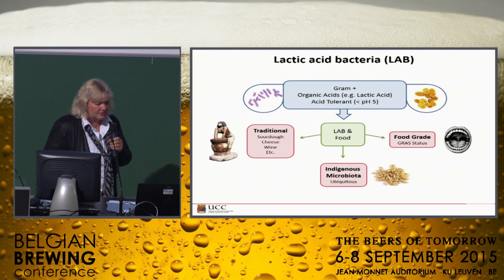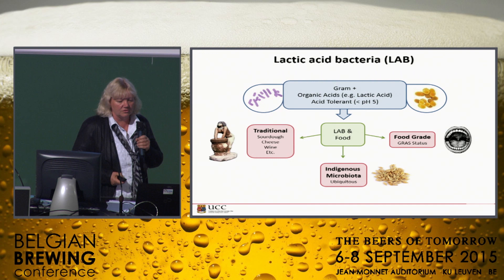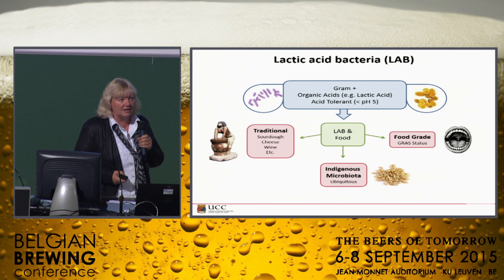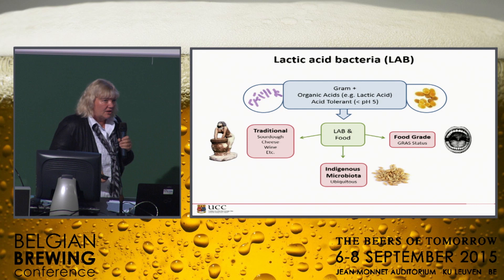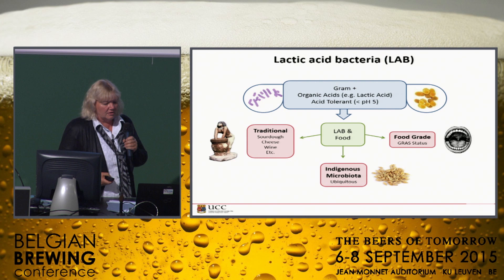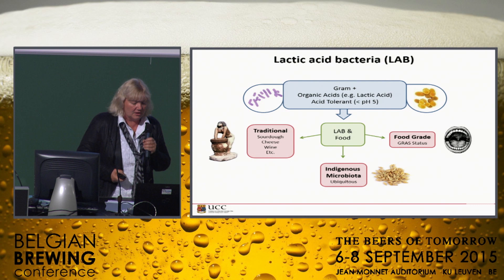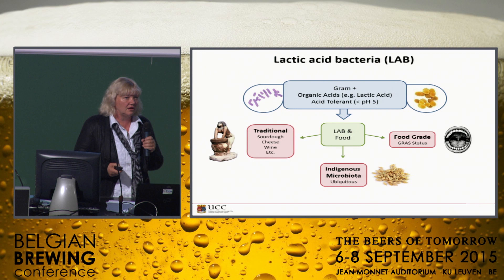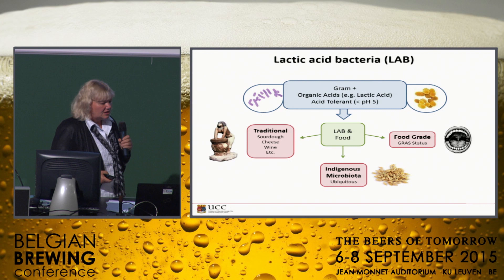To quickly introduce them: they're gram positive, they can utilize carbohydrates and turn them into lactic acid, and sometimes also a little bit of acetic acid, and if you're very lucky, even alcohol. They are very acid tolerant, so they can live quite happily in beer, especially if they're hop resistant as well. A lot of them have GRAS status, which means they're generally recognized as safe — not all of them, but the majority. You also find them generally on most cereals and vegetables as an indigenous microflora.